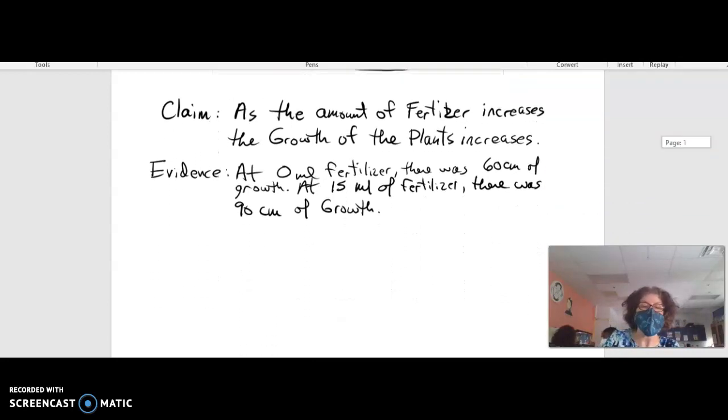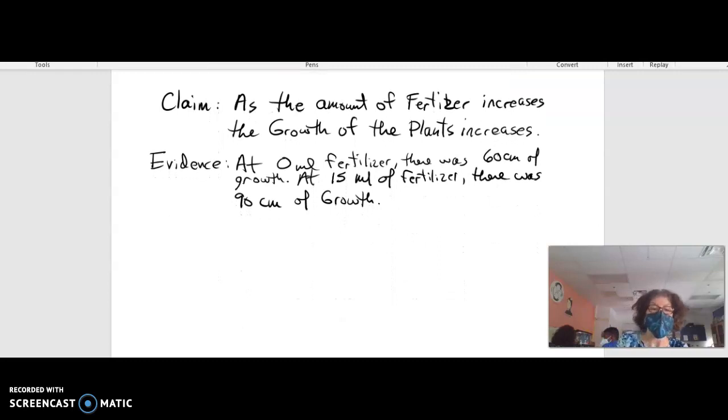Sometimes the reasoning confuses students the most. With the reasoning section, now what you're going to do is you're going to explain why this relationship is the way it is. And in this section, you might normally have to go to your notes and really look at, you know, if you're making a graph that's about cellular respiration or about photosynthesis, and you need to go back to your notes and really dig into the why.